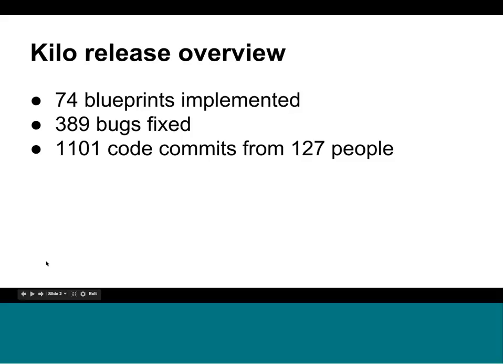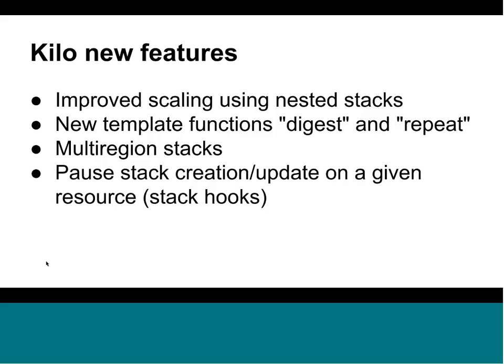Going on to the next slide, we have a summary of some of the key Kilo new features. First, improved scaling using nested stacks. Previously, a stack with a lot of nested stacks or template resources had all operations occur by loading the entire tree in memory. We now have an Oslo messaging boundary between every template resource, which allows resource operations to be spread across multiple HEAT engines — an improvement in scalability.